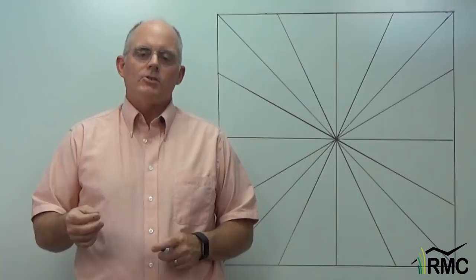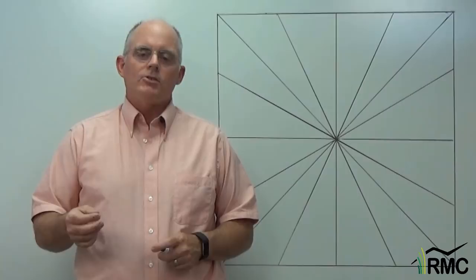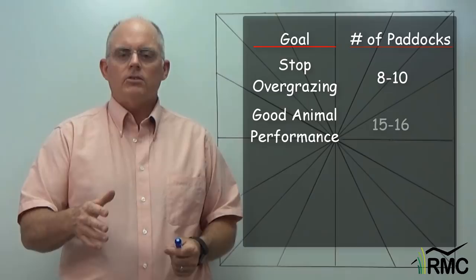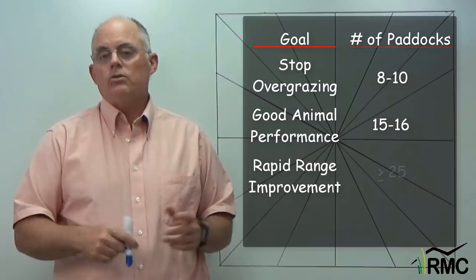I remember one January school where we toured a ranch with about 1,000 acres divided into a 16-paddock grazing cell. It usually takes 8 to 10 paddocks just to stop overgrazing. 15 to 16 paddocks will get the graze periods short enough to support good animal performance, and it usually takes 25 pastures or more to see rapid range improvement.